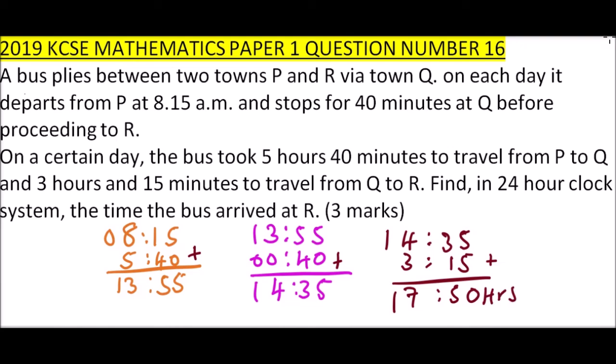So that is the time it got to town R - 17:50 in 24-hour system, which is the same as 5:50 p.m., or we can say in common language it arrived to town R at 10 minutes to six.